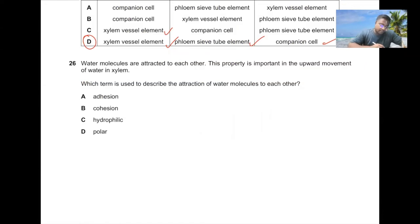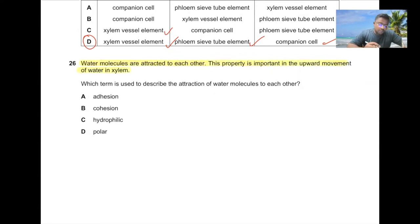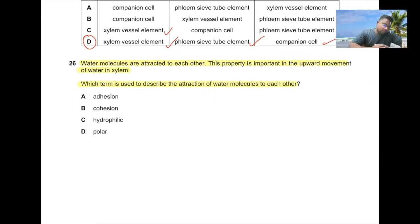Question number twenty-six. Water molecules are attracted to each other, and this property is important in the upward movement of water in xylem. Which term describes this attraction? Cohesion. 26B is the correct answer.